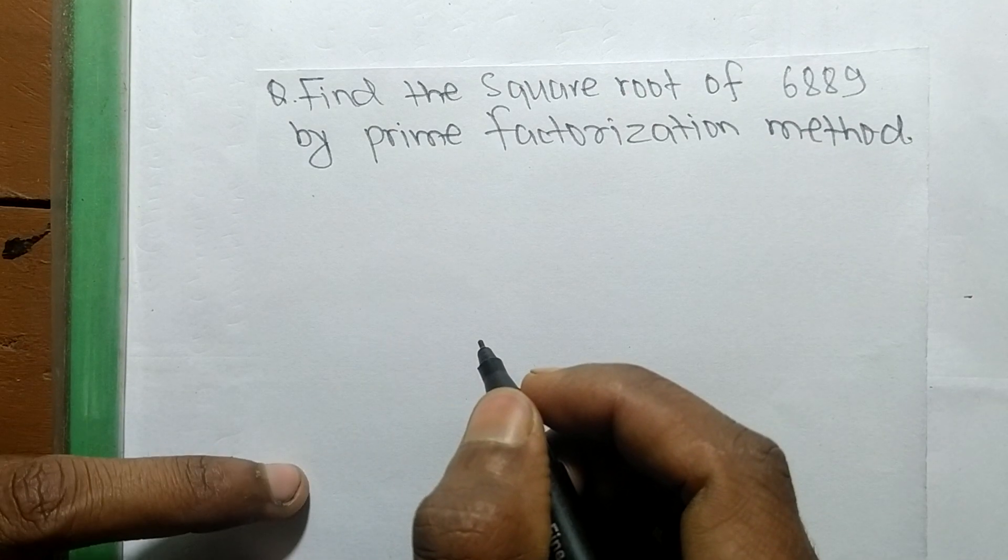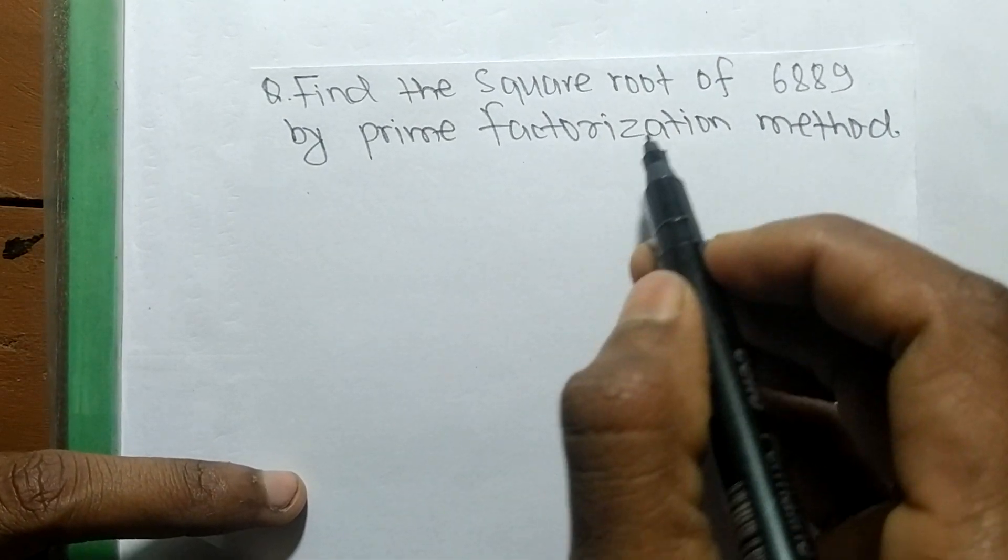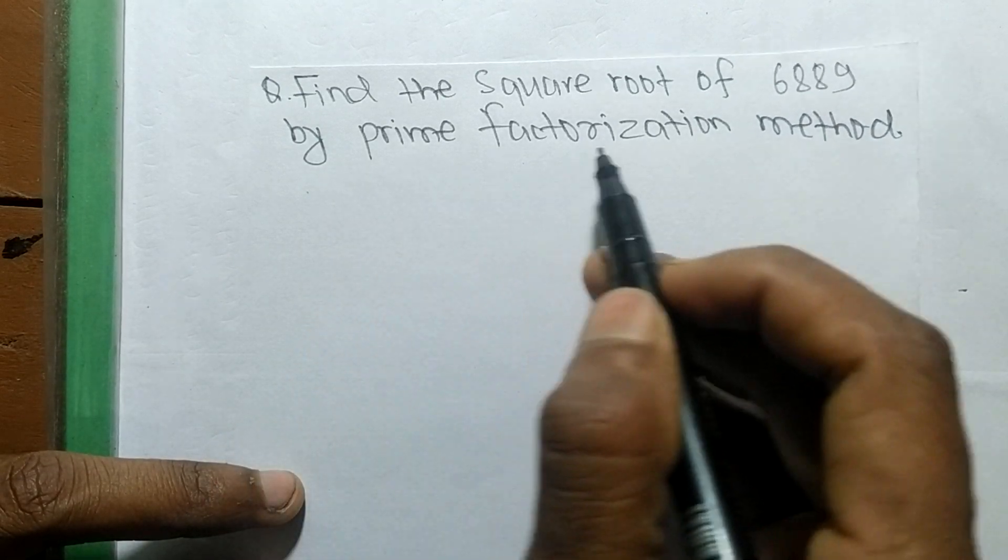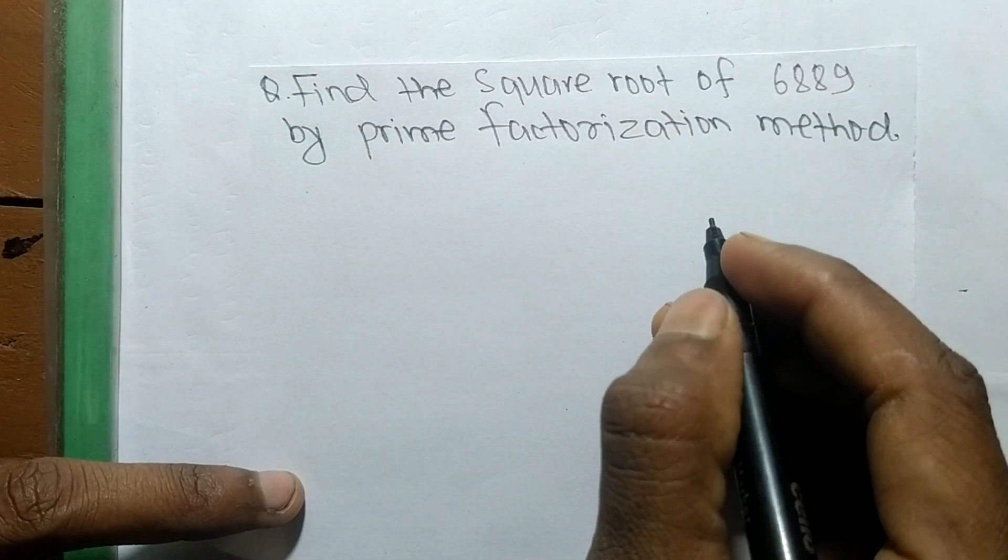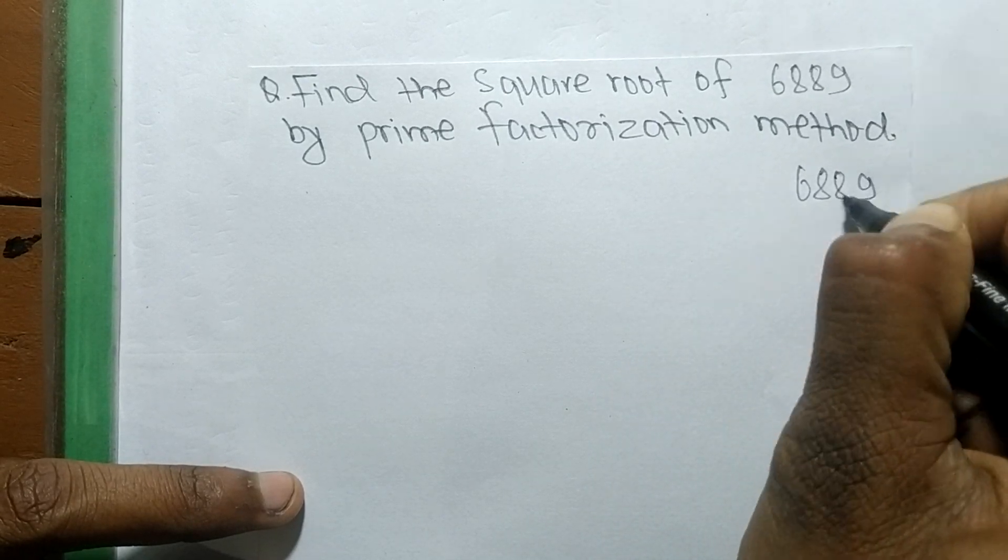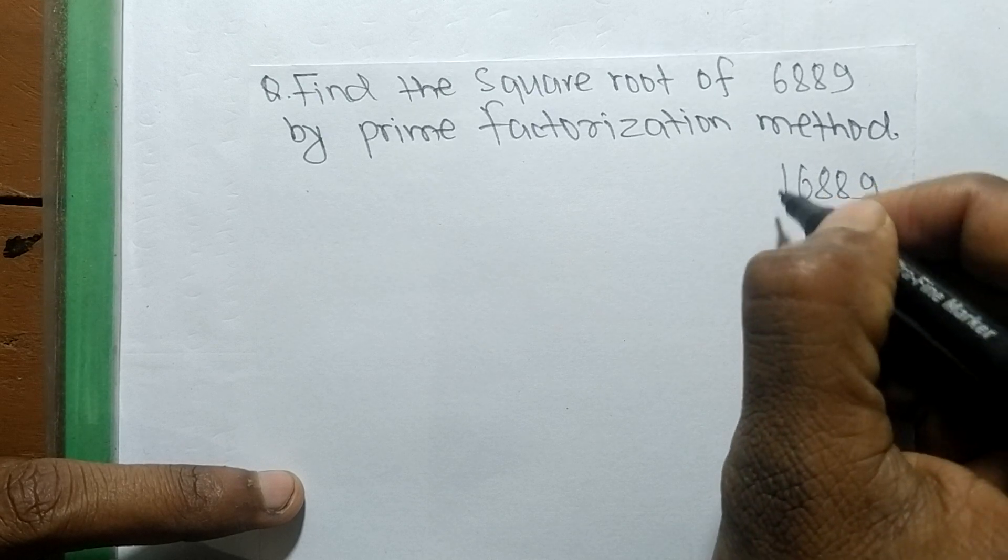So today in this video we shall learn to find the square root of 6889 by prime factorization method. So first of all we find out the prime factors of 6889.